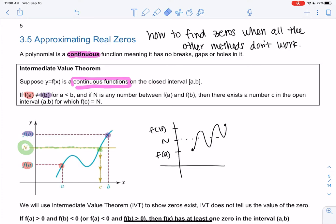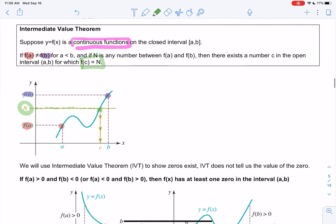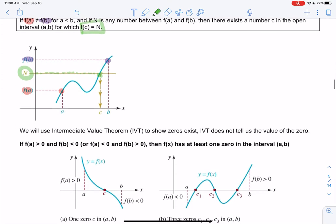There's some function value where f(c) equals n. It's basically just telling us at some point we have to hit the numbers in between. We are going to use it for zeros, so I think with zeros it will make a lot more sense, and this is going to be our only application. So we're going to use this to show zeros exist—it does not tell us the value, but it tells us zeros exist.